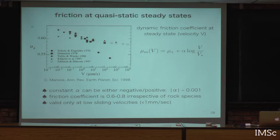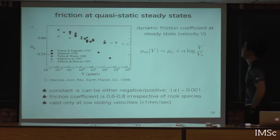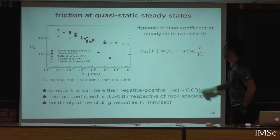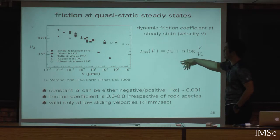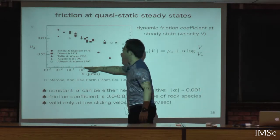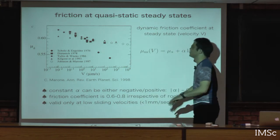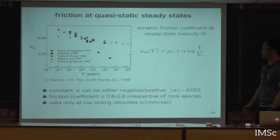This formula does not describe the absolute value of the steady-state friction coefficient — it only describes the change from a reference state. Empirically, in quasi-static slip, the absolute value of the friction coefficient takes a value ranging from 0.6 to 0.8, and that is insensitive to rock species or temperature.